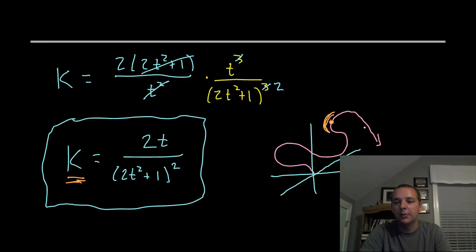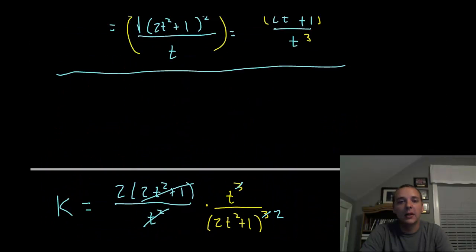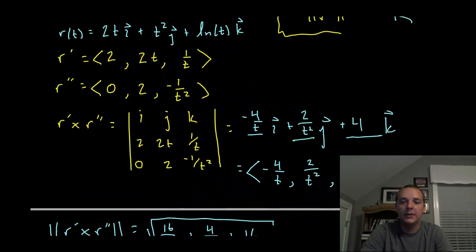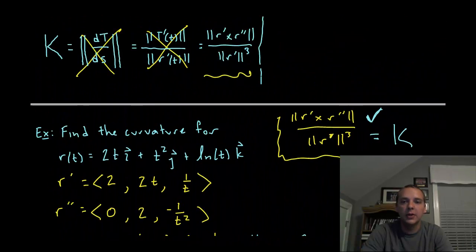Notice the curvature is not constant. Some places are flatter, some places are more curved, so we expect our curvature to be a function of t. This will be your final answer. I know there's a lot of algebra steps, a lot of stuff we had to go through, but hopefully it made sense.